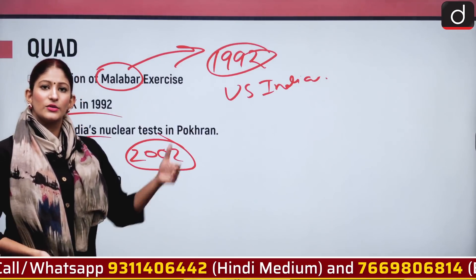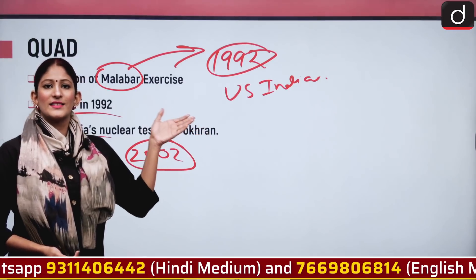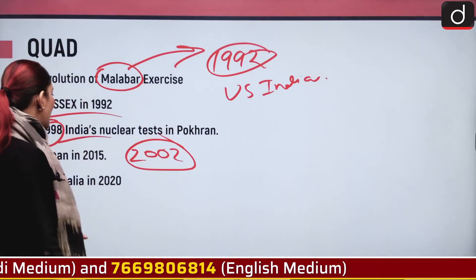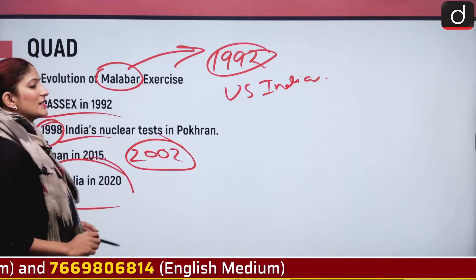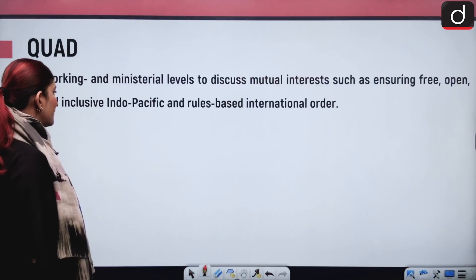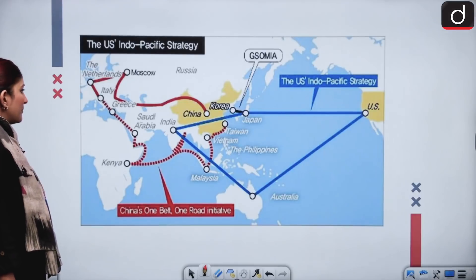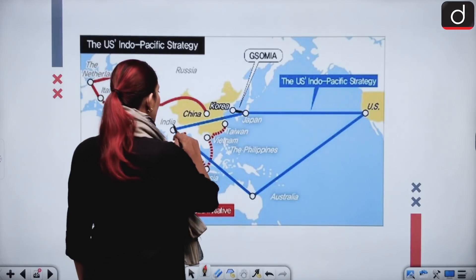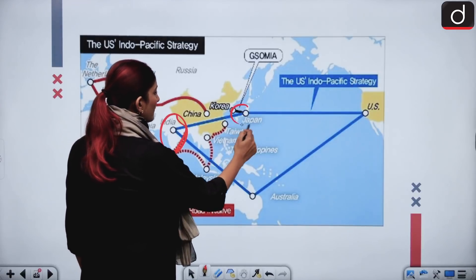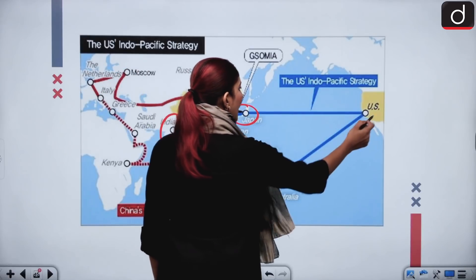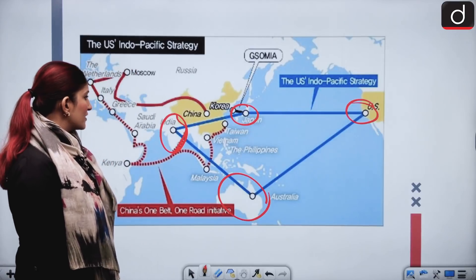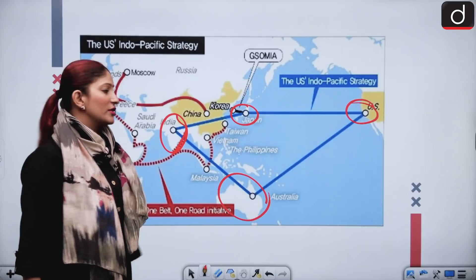Through the process of the Malabar exercise, we got Quad, or the Quadrilateral Security Dialogue. It was first ever mooted in the year 2007 by the Japanese Prime Minister Shinzo Abe. As you can see with the help of this diagram, this is India, this is Japan, and we also have Australia and the US — it forms a quadrilateral. That is why it is known as Quad, and the Indo-Pacific is an extremely important region.